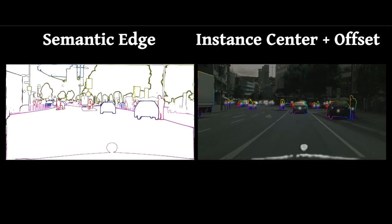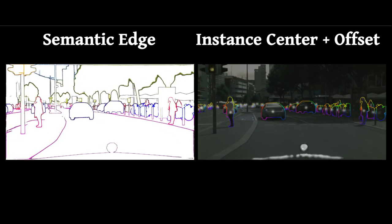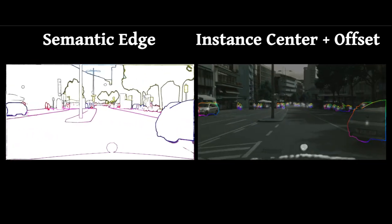Semantic edge associates each edge pixel with semantic category. Instance center and offset associate each edge pixel with instance ID.